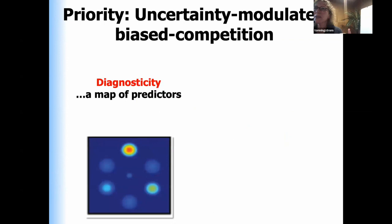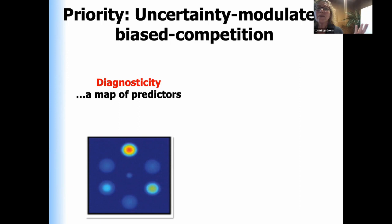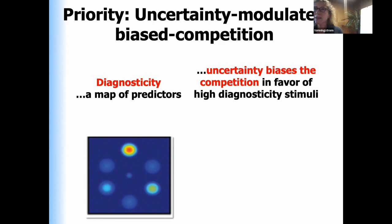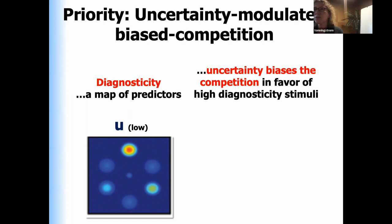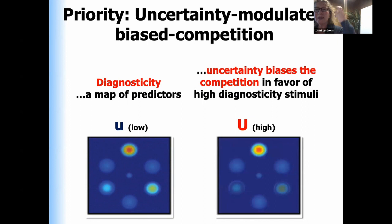Our hypothesis so far is that when you have a task or behavioral goals, you load perhaps in memory a map of the predictors relevant to the task. That map implements competitive interactions among candidate visual stimuli so you only attend to one at a time. The presence of uncertainty biases the competition in favor of the most reliable predictors. If you're in a state of low uncertainty, priority maps might be relaxed and attention will wander. But higher uncertainty signals: attend right here, this is the best predictor.